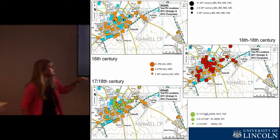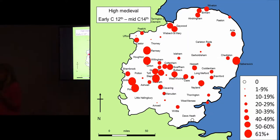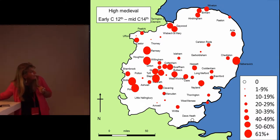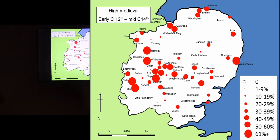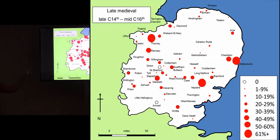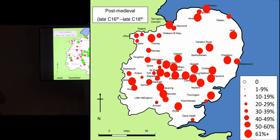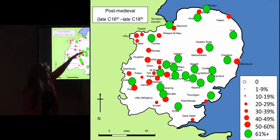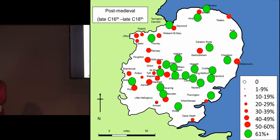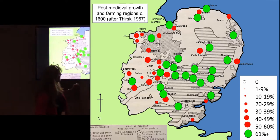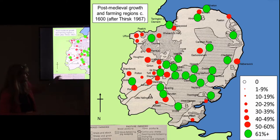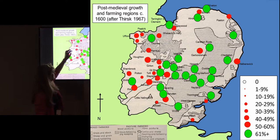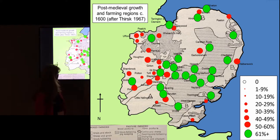Looking at the distributions across the whole region — where the bigger circle indicates the higher percentage of pits producing pottery — this shows the situation before the Black Death, then afterwards, giving a clear indication of the level of contraction after the 14th century, and then the post-medieval 16th to 18th century recovery. We can highlight the places where growth is greatest and see this shift to the south that appears in the broader historical demographic data. Relating this to the farming regions, the grain-growing areas — areas A and B, the unshaded areas — are growing less dynamically than those areas with more stock rearing and pastoralism.